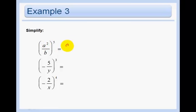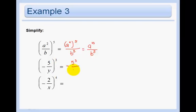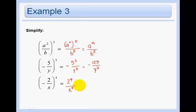We have a squared to the fifth over b to the fifth. A power to a power becomes more powerful, so you multiply them. Here we have a negative cubed: negative times negative is positive, times another negative is negative, so it stays negative. Then we do 5 cubed over y cubed, and 5 cubed is 125. In our last example, a negative times a negative times a negative times a negative becomes positive. Then we do 2 to the 4th over x to the 4th, which is 16 over x to the 4th.